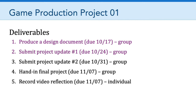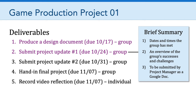For this week, you're going to focus on the second deliverable for game production Project 1, which is to submit project update number one. Essentially, all that is is a brief summary — you need to let me know the dates and times that your group has met, and provide an overview of the group's successes and challenges when it comes to designing and developing your game. This overview doesn't have to be very long, maybe two or three paragraphs at most. This document should be submitted by the project manager on behalf of the entire team.